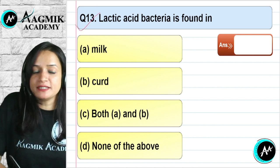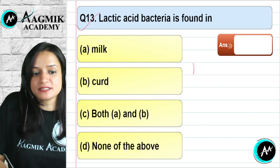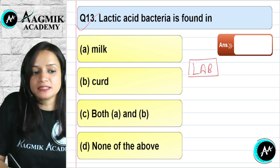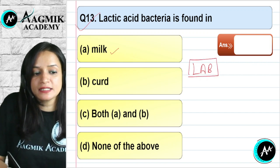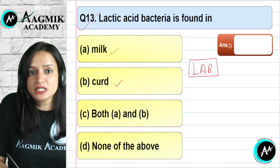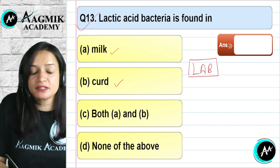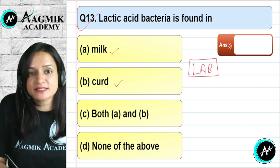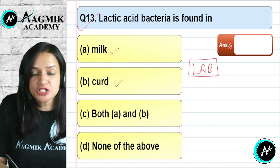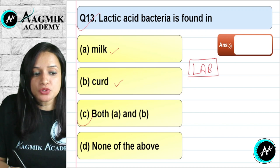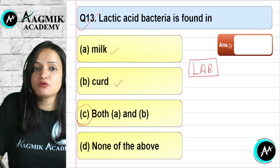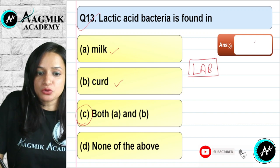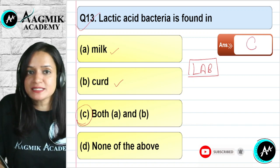Question number 13: Lactic acid bacteria (LAB) is found in milk and in curd when milk is converted to curd. It is highly nutritious for the human body. The correct option is C, which includes both A and B.